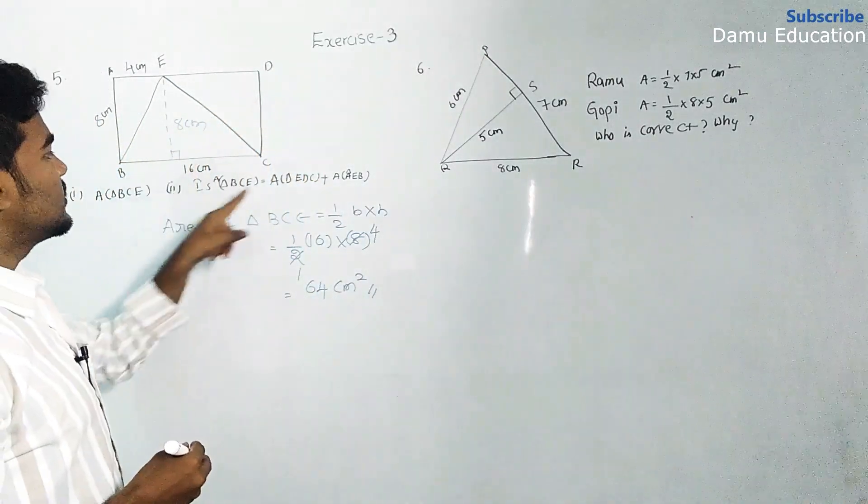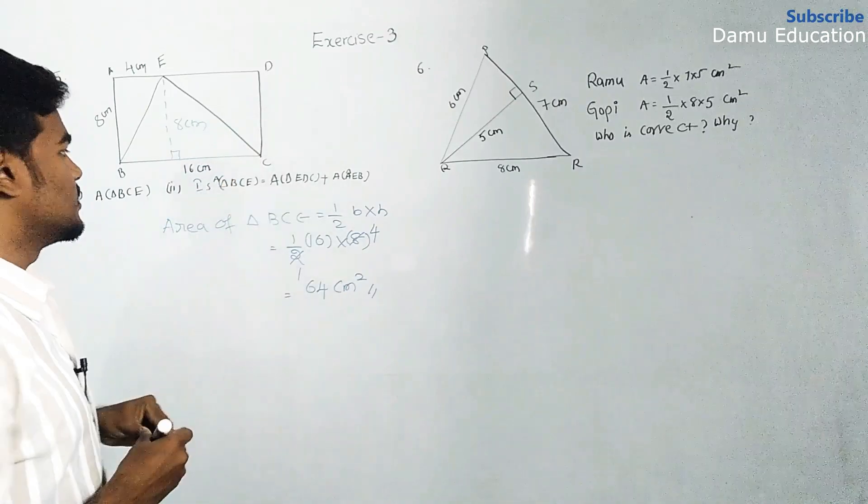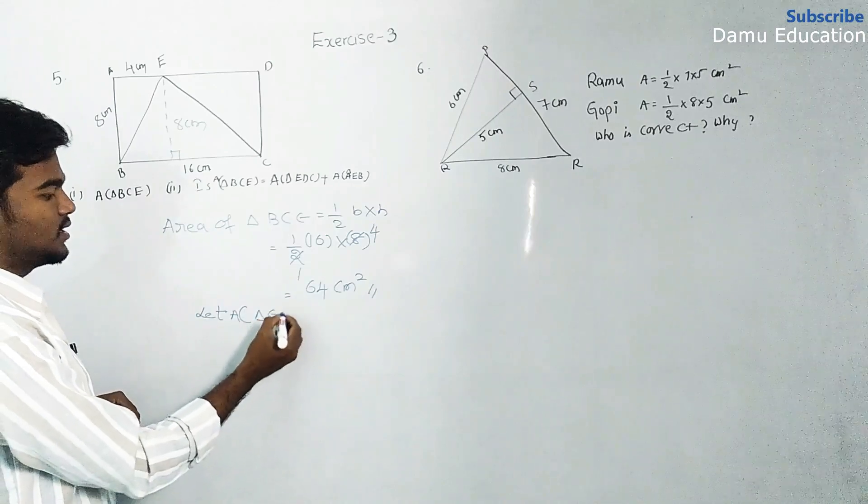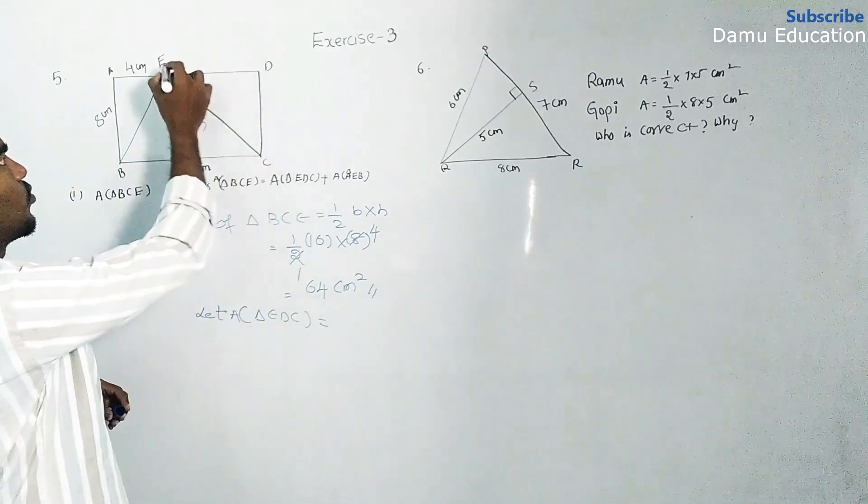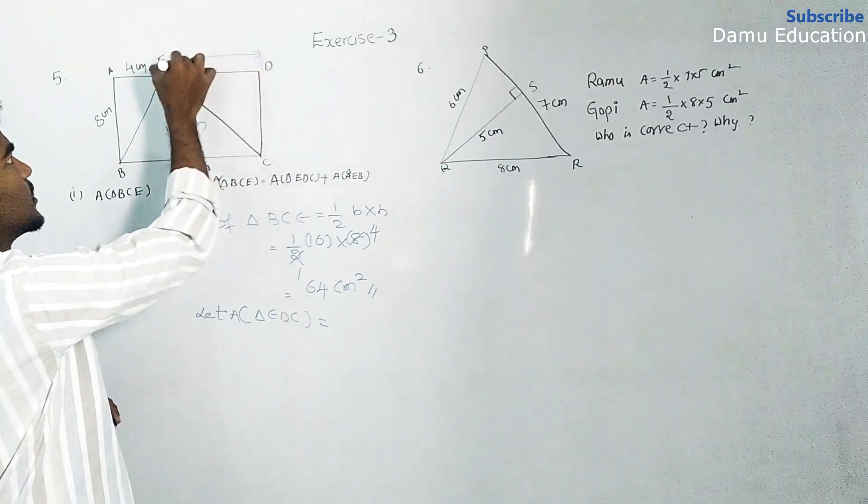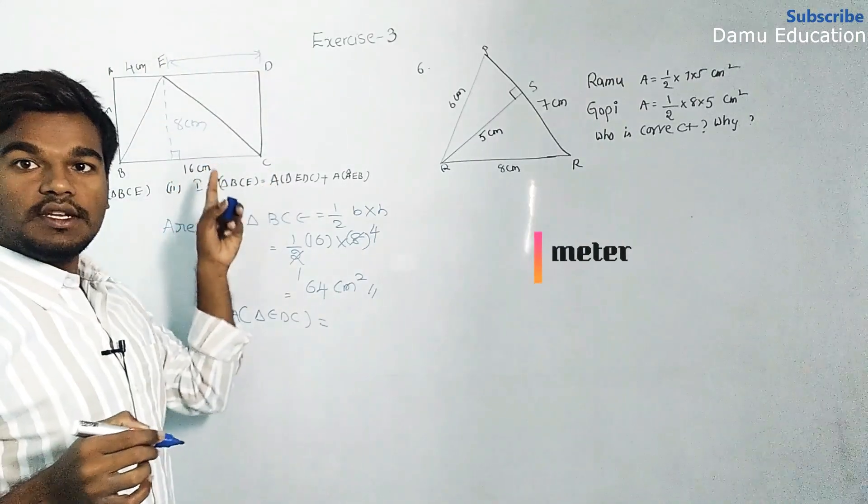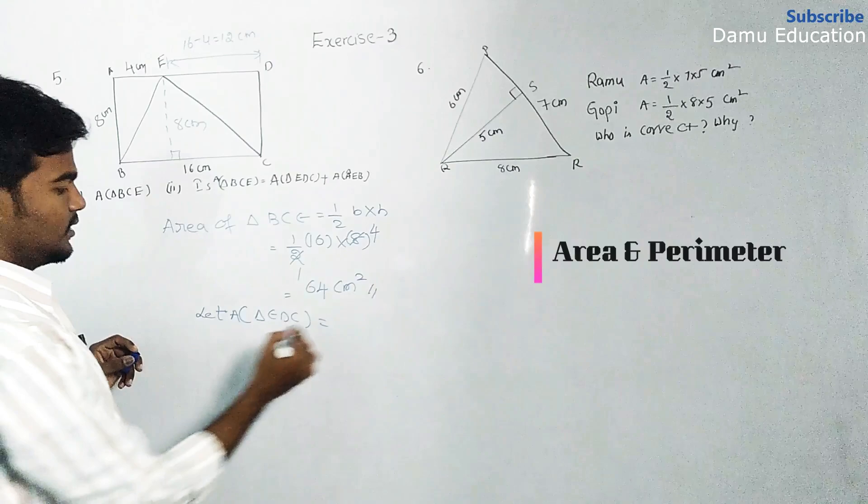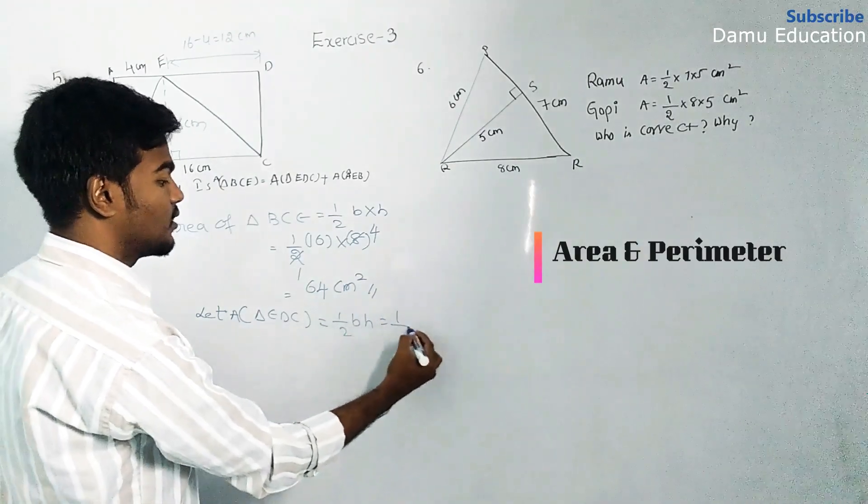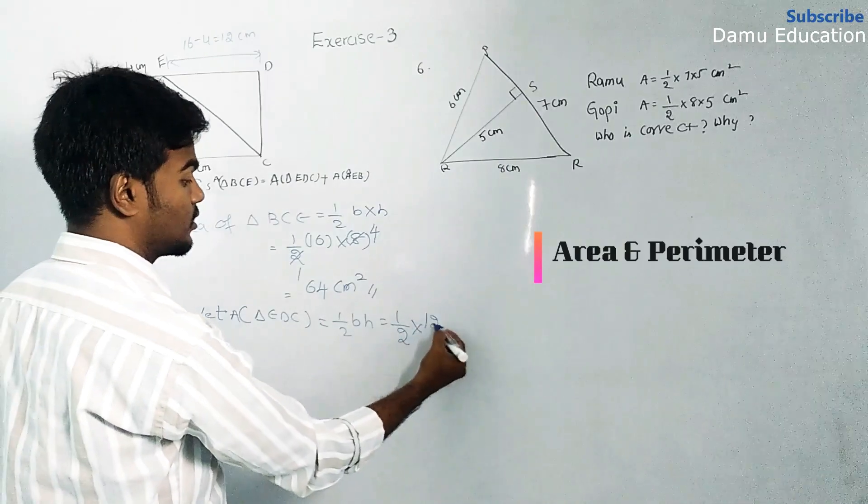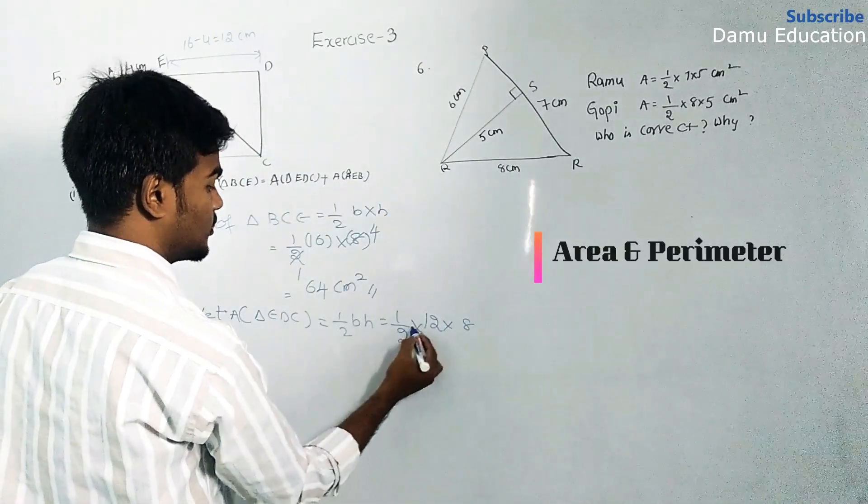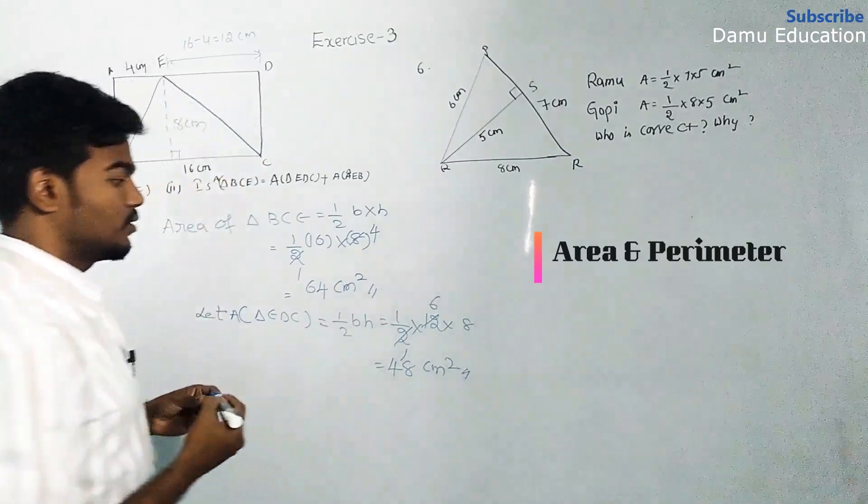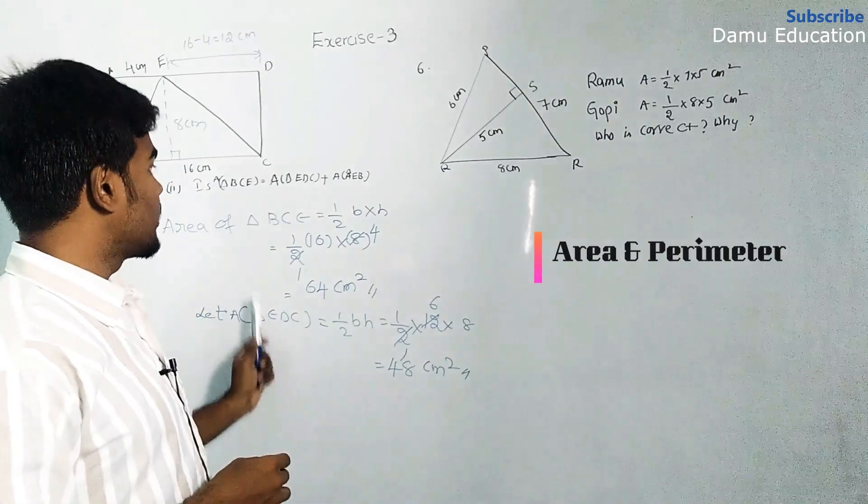Triangle BCE is the sum of BCE and AE. So for area of triangle EDC, the total length is 16, so the base length will be 16 minus 4, which is 12 cm. Half into base into height: half into 12 cm into 8 gives us 48 cm square for area of EDC.